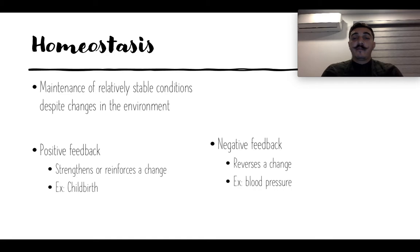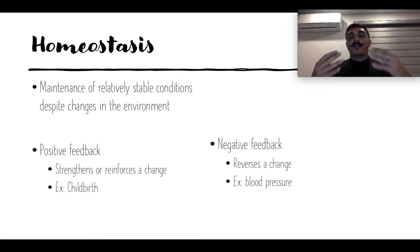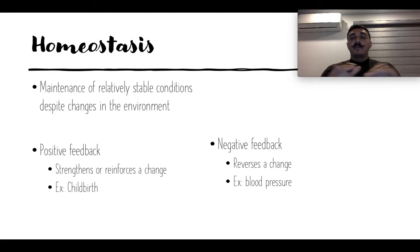For example, positive feedback means keep doing it — it strengthens or reinforces the change. When a woman is about to give birth, the contractions send signals to the brain that this is good — keep contracting, keep pushing to get the baby out of the body. That's positive feedback of homeostasis, where something is happening that we want to keep going.